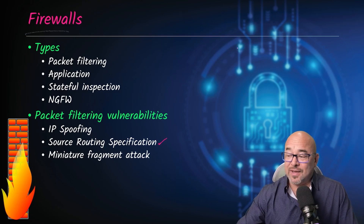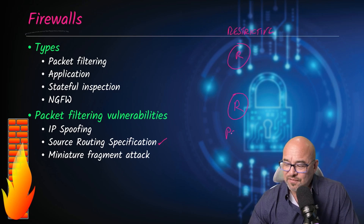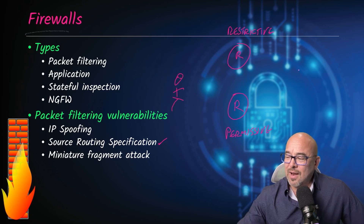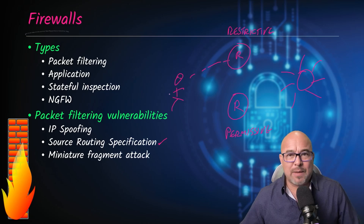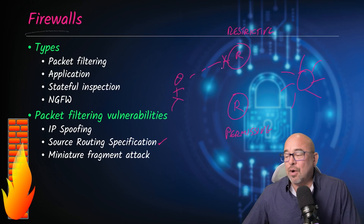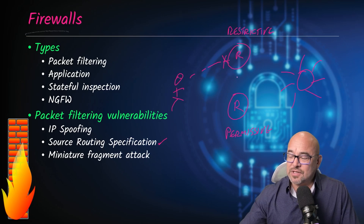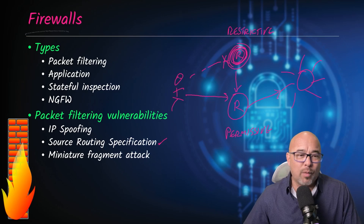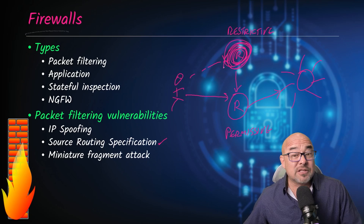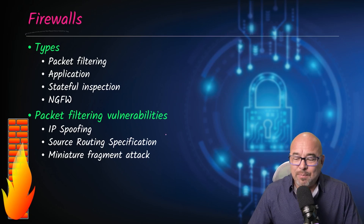The other vulnerability is source routing manipulation. If there's a restrictive router and a permissive router, the normal route might be through the restrictive one where traffic gets blocked. However, if the permissive router is designed to trust routes from a certain source, an attacker might malform a packet to fool it into thinking it came from a trusted router when it really did not — causing the permissive router to forward the traffic onto the rest of the network.